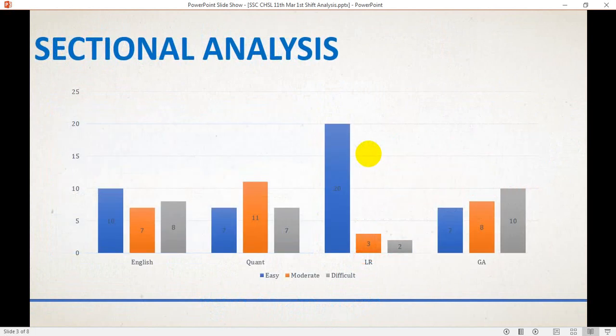This is represented on a bar graph. The blue represents easiest questions, orange represents moderate questions, and gray represents difficult questions. For English: 10, 7, and 8. Quant: 7, 11, and 7. Logical reasoning: 20 were easy, 3 moderate, 2 difficult.